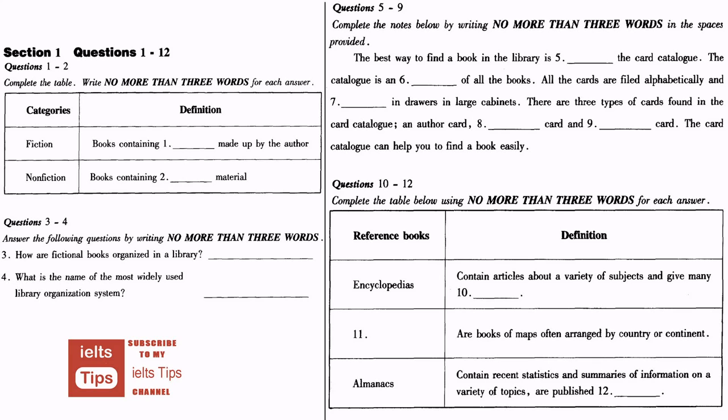Next is atlases. An atlas is a book of maps. It may contain many different kinds of maps. The maps in an atlas are often arranged alphabetically by country or continent. Almanacs are also a type of reference book. An almanac is a book that contains recent statistics and summaries of information on a wide variety of topics. It is published annually. Information is listed alphabetically by subject.